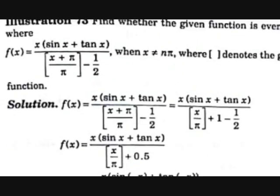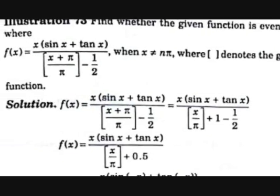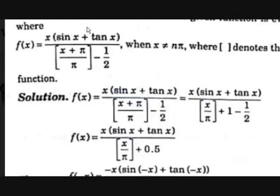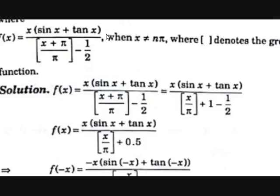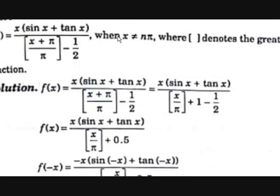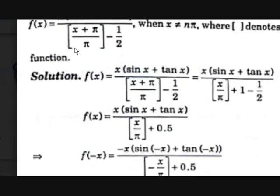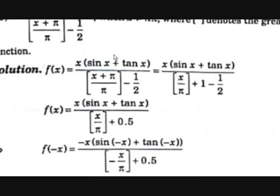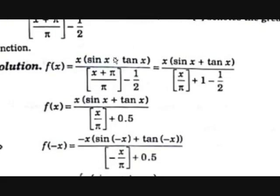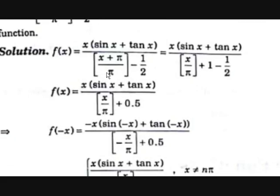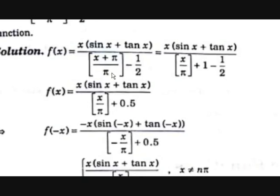Now an interesting example: find whether f of x equals [x times sin x plus tan x] divided by [x plus pi over pi] minus one half is even or odd, where x is not equal to n pi and square brackets denote the greatest integer function. Simplifying the denominator: x plus pi over pi becomes x over pi plus 1, and by the property of greatest integer functions, the integer 1 comes outside, giving greatest integer of (x over pi) plus 1. So the denominator becomes greatest integer of (x over pi) plus 1 minus one half, which simplifies to greatest integer of (x over pi) plus 0.5.